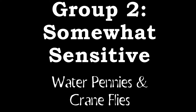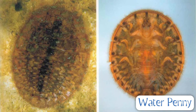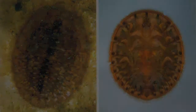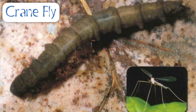Next I'm going to talk about some of the organisms in group two, or the somewhat sensitive macroinvertebrates. This is a water penny — you can identify a water penny because of their brown, flattened body. The picture on the left shows the top view and the photo on the right shows the bottom view. Just like a sand dollar, water pennies have tiny little legs that help them to move around. This is a cranefly. Cranefly larvae can be found in aquatic, semi-aquatic, and terrestrial environments. A lot of people think the adult cranefly resembles a mosquito, but craneflies do not bite or feed on blood — they feed on nectar from flowers.